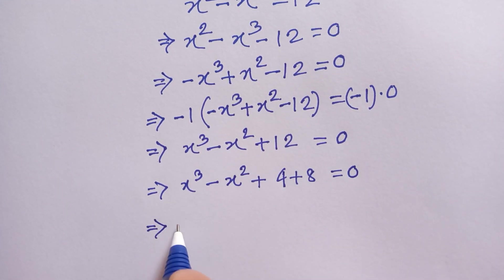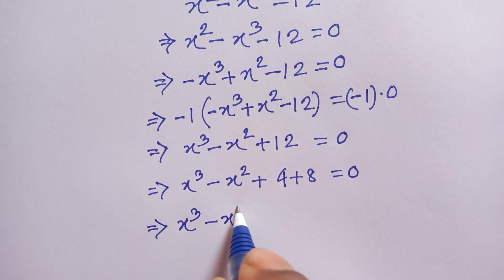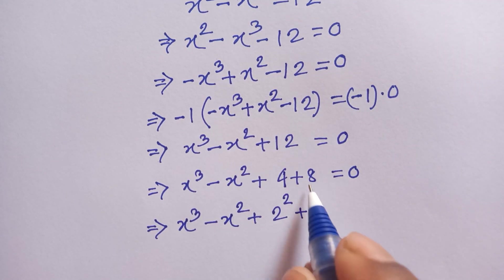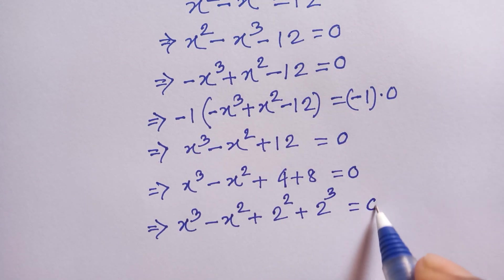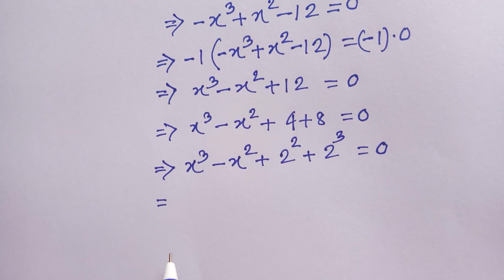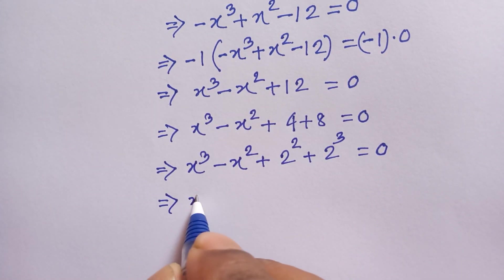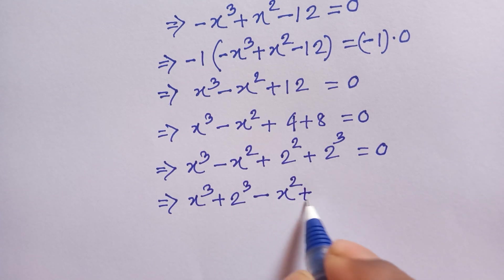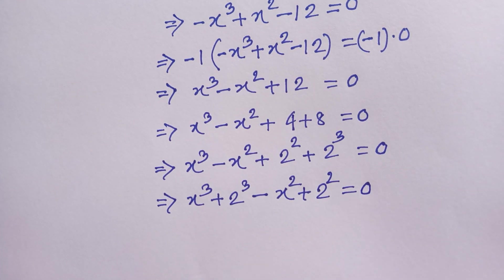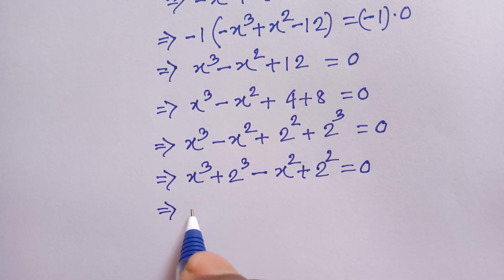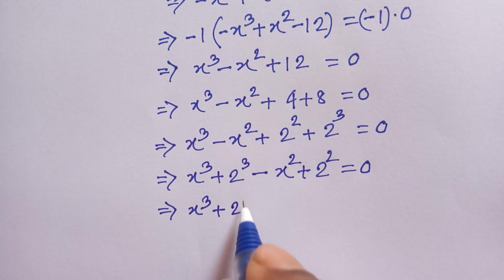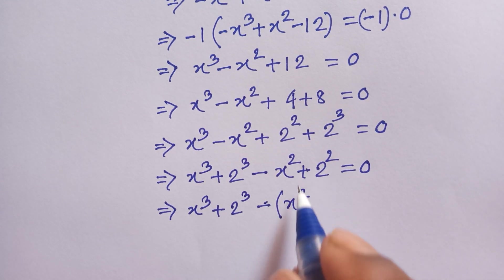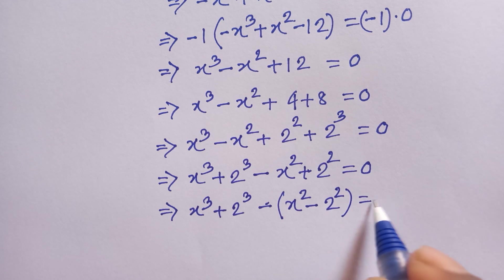So x cubed minus x squared plus 4 plus 8 can be written as x cubed minus x squared plus 2 squared plus 2 cubed is equal to 0. We rearrange this pattern so it will be x cubed plus 2 cubed minus x squared plus 2 squared is equal to 0.